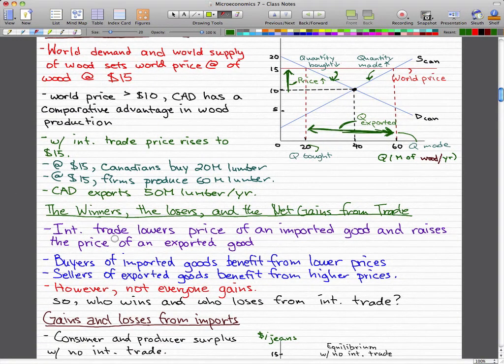So now we're going to talk about the winners, the losers, and the net gains from trade. So we know that international trade lowers the price of an imported good and raises the price of an exported good. We've seen this process in the last two graphs that we went through, in this video and the last video.